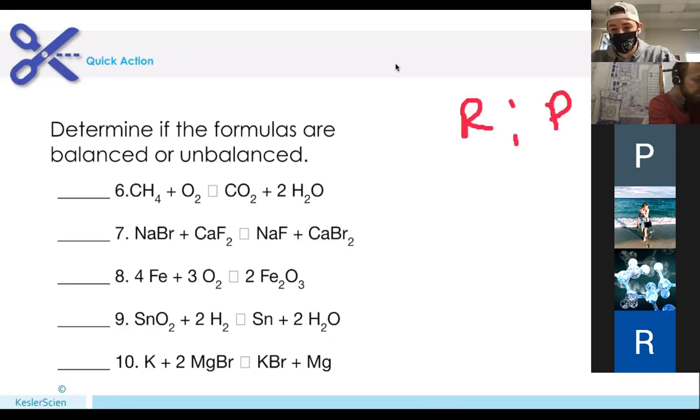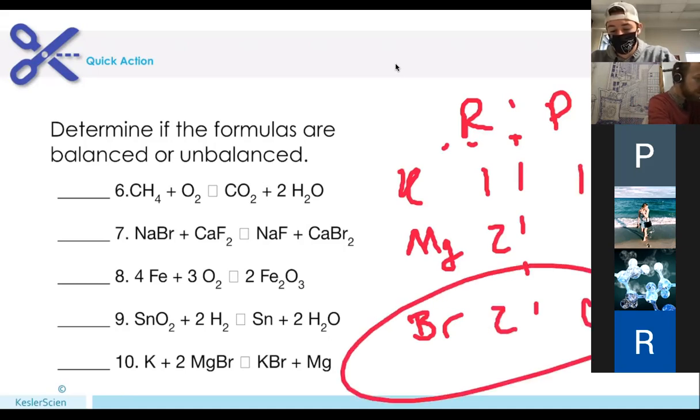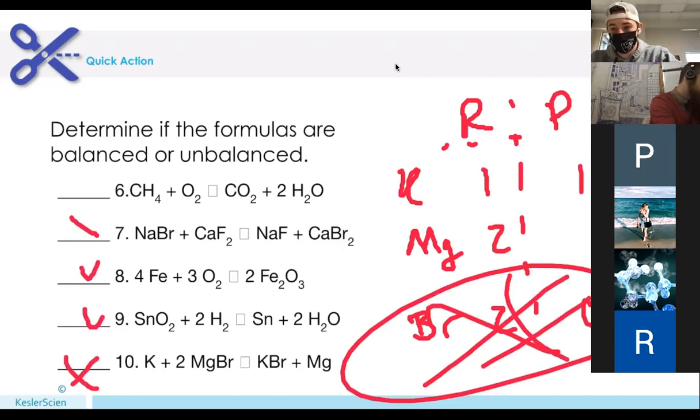Last one, the rubber match. Reactants, products. Potassium, magnesium, bromine. One, two, two, one, one. Oh, man. Imbalanced. Take it for the win. Questions and concerns about determining whether or not these equations are balanced.